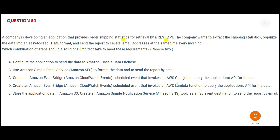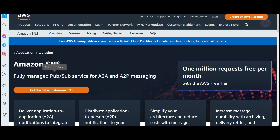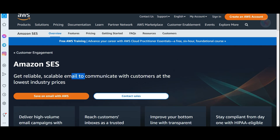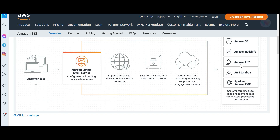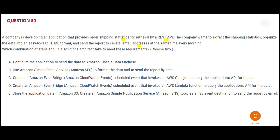What is actually required is to organize the data in an easy HTML format and then send it to various email addresses. So we need an email service. In AWS there are two options for email: SNS, which helps with push notifications and pub/sub services, and SES, which is for scalable email communications. If you want to send emails in bulk primarily focused on email, SES is the service to use.